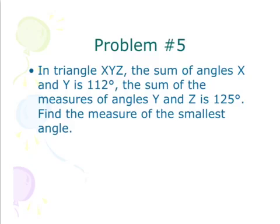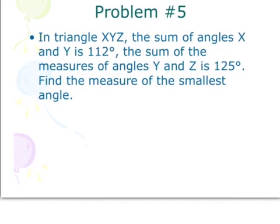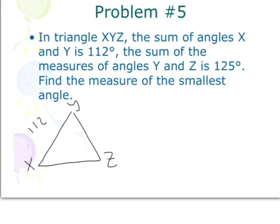Alright. So in triangle XYZ, the sum of the angles of X and Y is 112. The sum of the measures of the angles of angles Y and Z is 125. Find the measure of the smallest angle. Now, I'm going to draw another picture for this one. So we have XYZ. And to illustrate the sum of X and Y, I'm just going to write 112 over here to help us out. And for Y and Z, I'm going to write 125 over here. Well, I know if